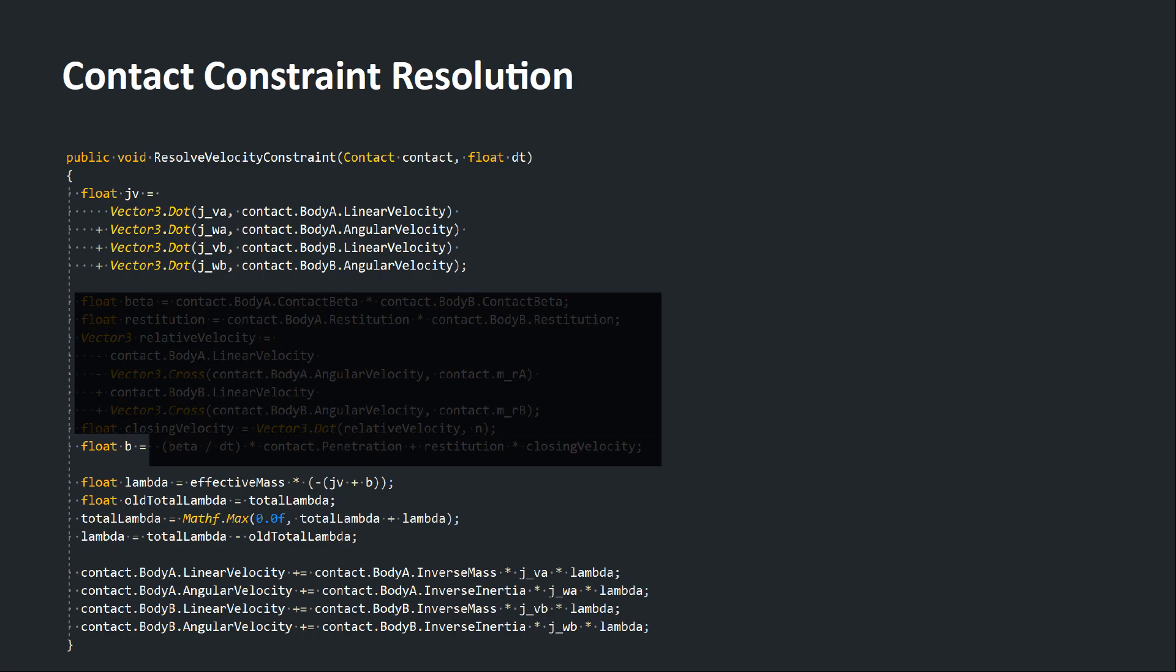This is the code for resolving the constraint within each iteration. The blacked out portion is the bias term, and let's just ignore it for now.